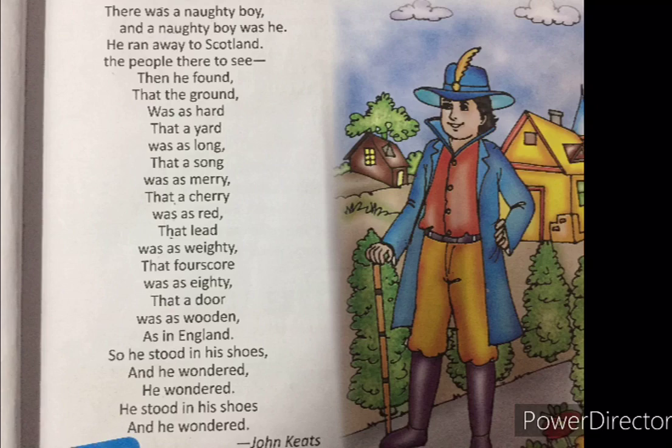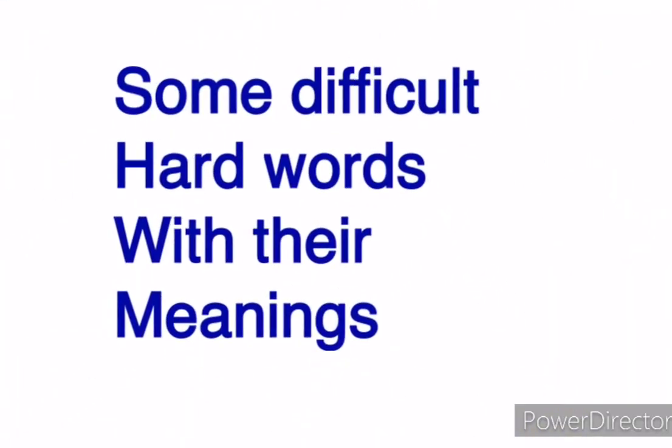Repeat with me kids: There was a naughty boy, and a naughty boy was he. He ran away to Scotland, the people there to see. Then he found that the ground was as hard, that a yard was as long, that a song was as merry, that a cherry was as red, that lead was as weighty, that four score was eighty, that a door was as wooden as in England. So he stood in his shoes, he wondered, he wondered, so he stood and he again wondered.